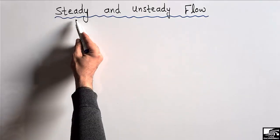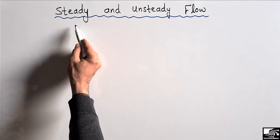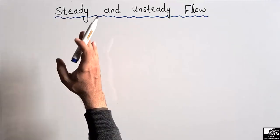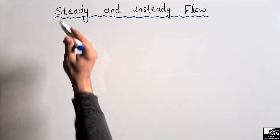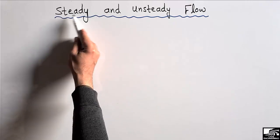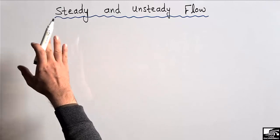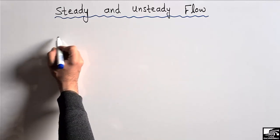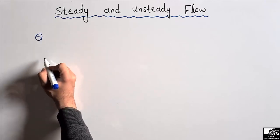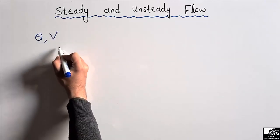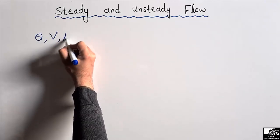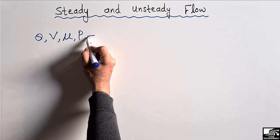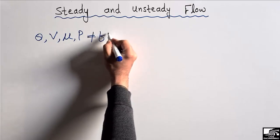Steady flow is the type of flow in which the properties of the fluid are not changing with respect to time. In steady flow, the properties of the fluid are not dependent on time. These properties may be the discharge, the velocity of the fluid, or the viscosity of the fluid, or the pressure of the fluid — these are not dependent on time.